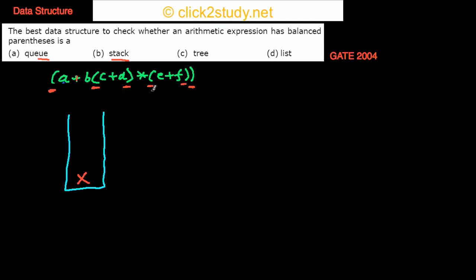Then I come here — it's again a left parenthesis, so I push again. Then I come to a right one, so I pop. Then I have one more right, so I pop again. Now I'm done with my input — I've reached the end, and the stack is empty. That means the parentheses were balanced.